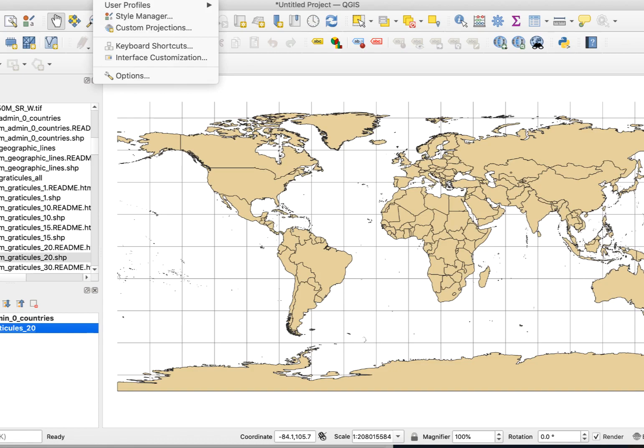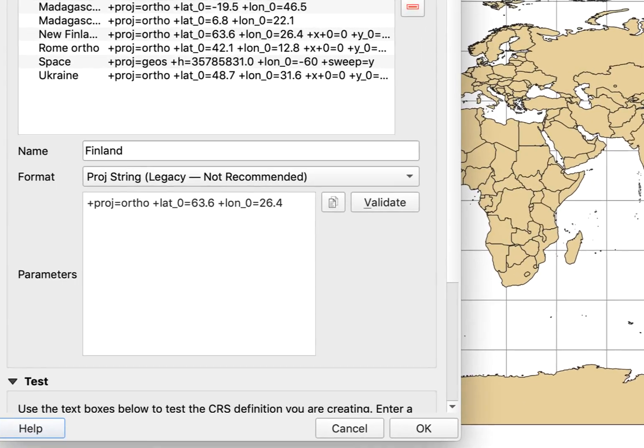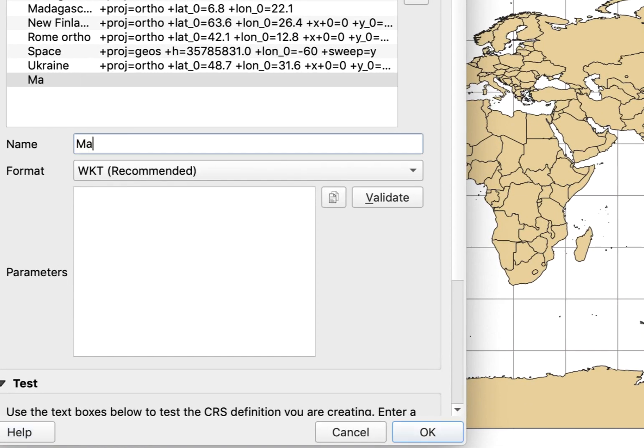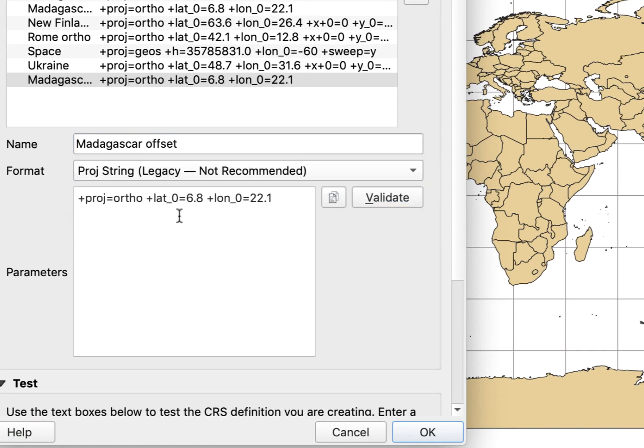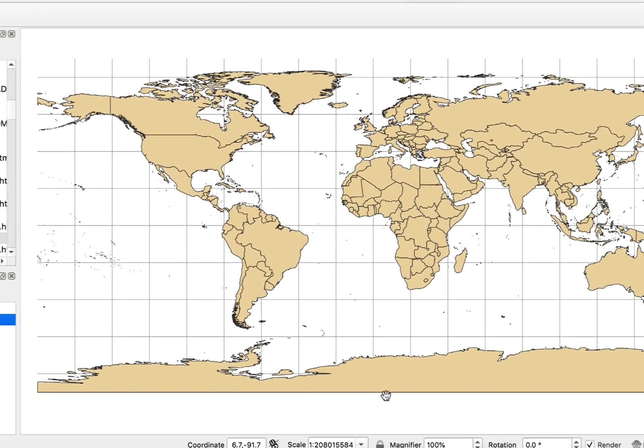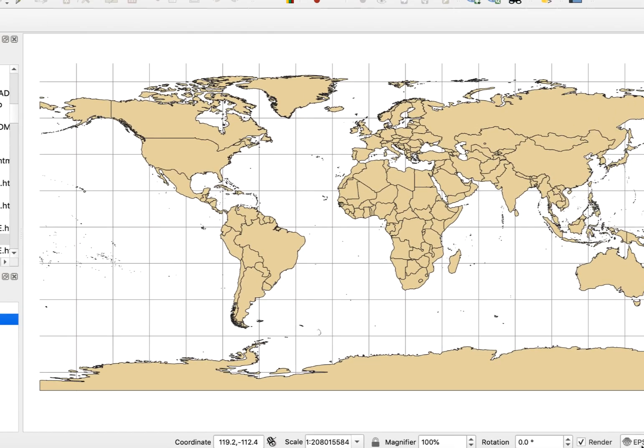Next, I'll go to QGIS to create a new custom projection. I'll name this one Madagascar offset. Then I'll paste the formula in with the offset coordinates, the ones centering on the Central African Republic. I'll apply this projection to the map, and here's what we get.